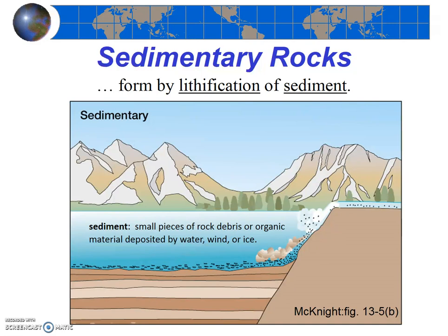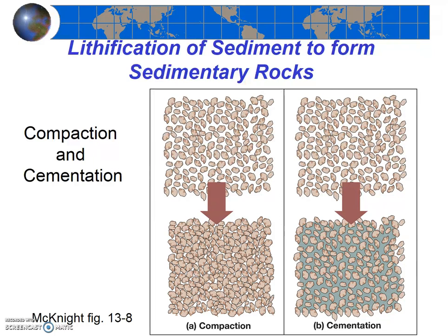Sedimentary rocks are formed by the lithification of sediment. What's lithification? We've encountered the prefix 'lith' before — it means rock. So lithification literally means 'rockification.' Lithification consists of two processes: compaction and cementation. Sedimentary rocks are either formed as sediment gets compacted together due to the weight of overlying sediment, or the sediment is cemented together as minerals present in the groundwater precipitate around sand and gravel grains.